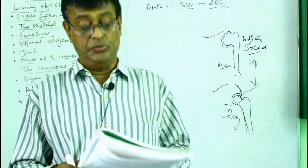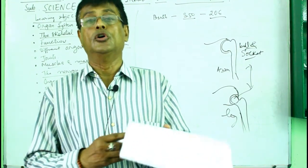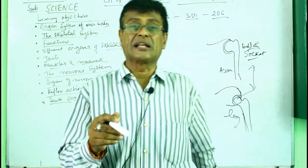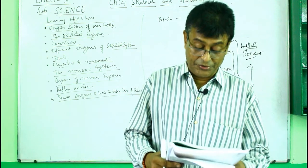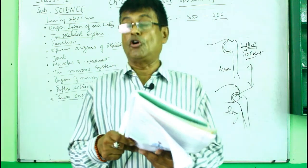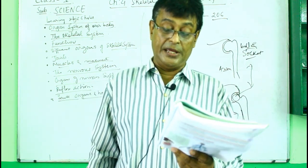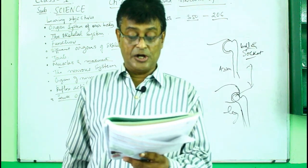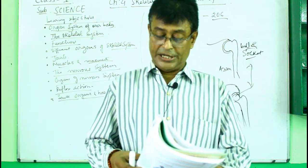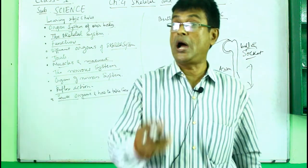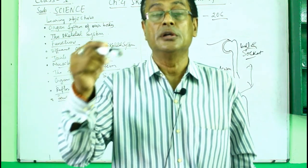Now we come to the muscles and movement. If only bones are there, movement would not be possible, so bones take the help of muscles. The soft and stretchy bands of tissues are called muscles. There are more than 600 muscles in our body and they perform different functions. They tighten and relax and help our joints in movement. Muscles attached to bones by strong fibers are known as tendons.